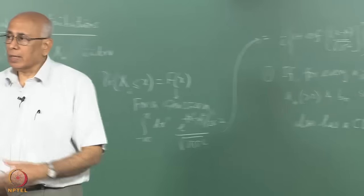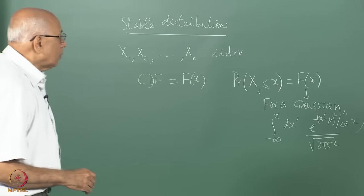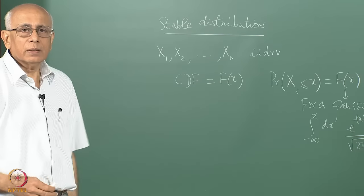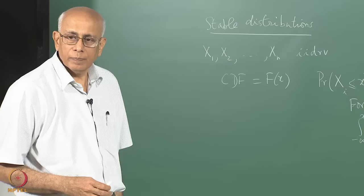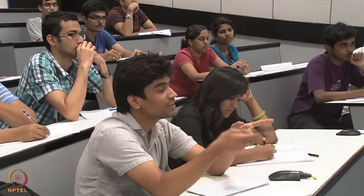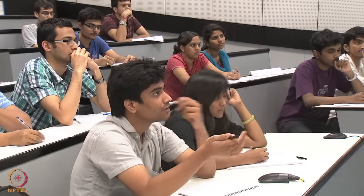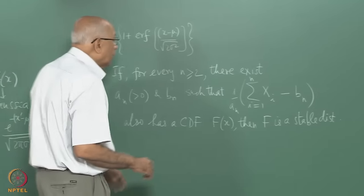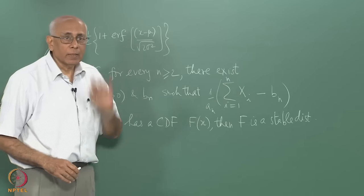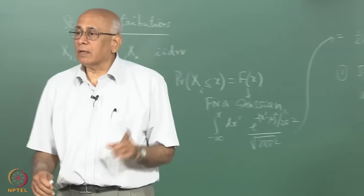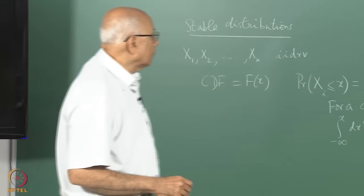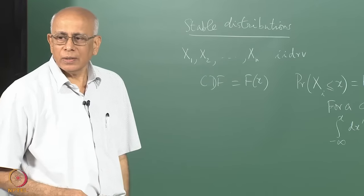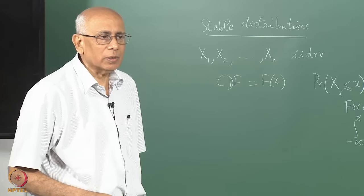We will write down all the stable distributions, but this definition, while precise, is operationally not very useful. Although it is a formal definition, it is not telling us how to go about finding such a stable distribution. It is a necessary and sufficient condition — this must be true for every n — but it doesn't directly characterize f itself.